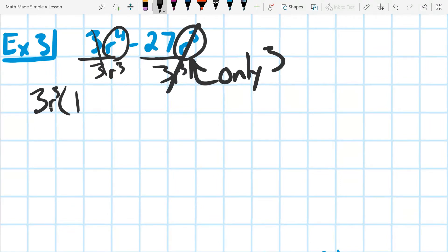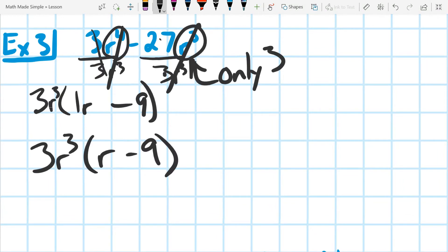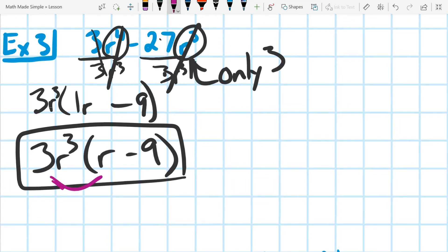If we do that, that one cancels out, and this one cancels down to just 1r minus, what's 27 divided by 3? 9. Truth be told, remember that 1 is optional, so you could also just write this as 3r cubed times r minus 9. Remember that we can always check this if we wanted by distributing this back in, and if we did that, we'd end up back with what we started, but we can stop right there, because we're trying to factor.